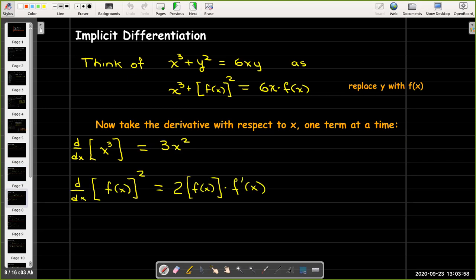We have to think a little bit more about the second term, quantity f(x) squared. Since the inside is a function, we'll have to use the chain rule. So we take the derivative of the outside, that would be 2 times f(x), times the derivative of the inside, which is just f'(x).